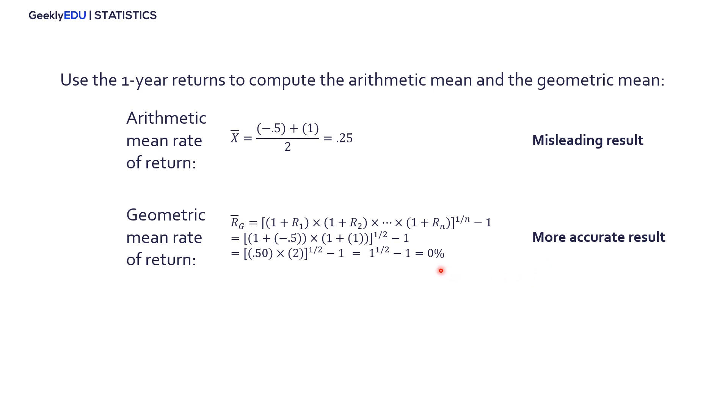So, 1 minus 1 gives us 0, which is a more accurate result because, like we said earlier, the initial investment and the investment worth at the end of the second year are exactly the same. So, that means it didn't change at all. So, we have a 0% change or rate of return.